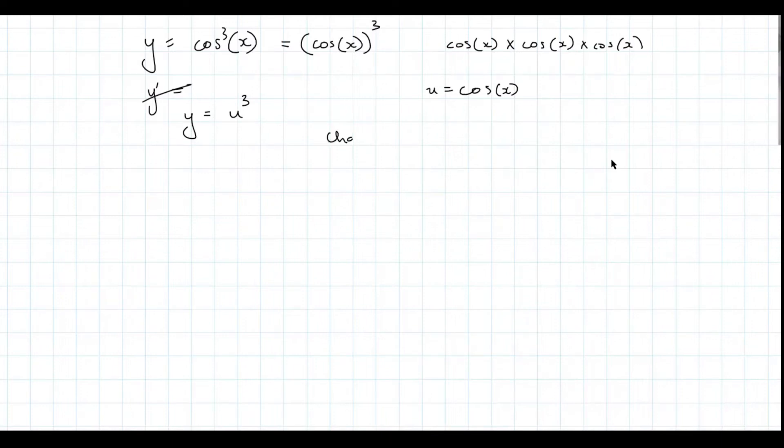And then using chain rule, we know that dy on dx, so y dash is going to be dy on du times du on dx.